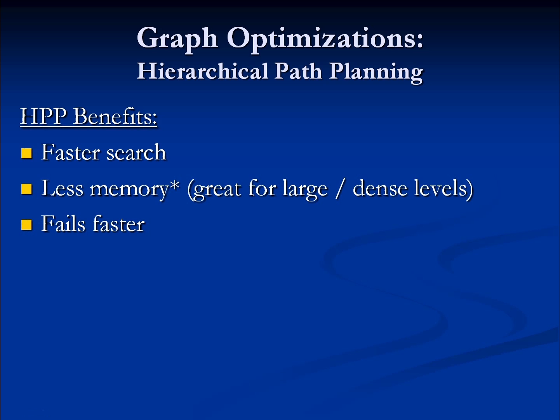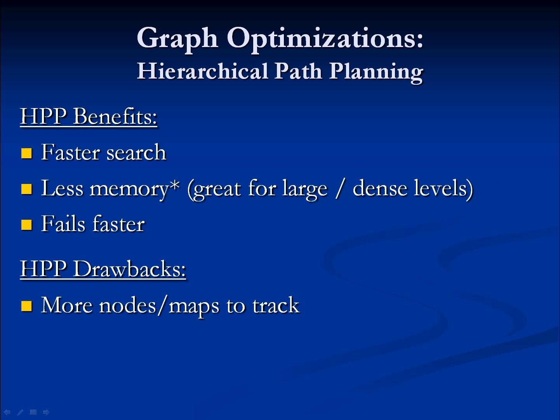There are drawbacks to every technique. While any one search has fewer nodes, the total number of vertices across all graphs is greater — we have the low-level graph and any number of higher-level graphs, all with vertices. If there are dynamic changes to the search environment, this is much more difficult to handle. With a single graph you only update one structure, but in a hierarchical path planning system, dynamic changes must affect all nodes across every level of the hierarchy.